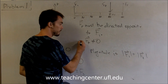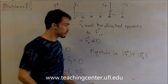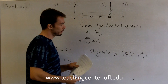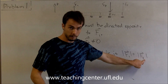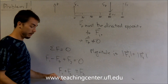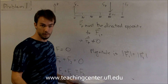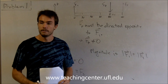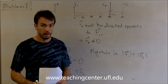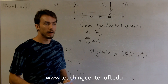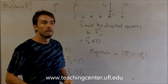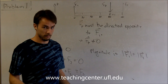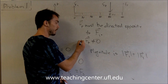So we have our three conclusions: Fp can't equal zero, Fp must be directed opposite to F1, and the magnitude of Fp equals F1 plus F2 according to Newton's law. That gives us choice one as our correct answer. A good way to approach these problems is not only to find the right answer, but to prove why the other answers are actually wrong, which is what we were doing here.